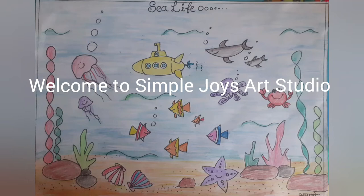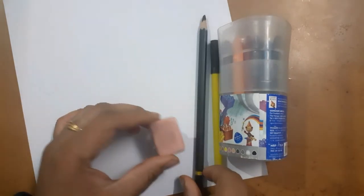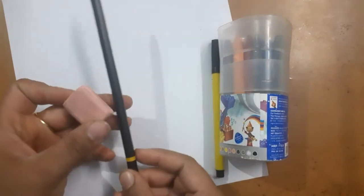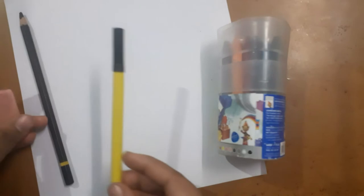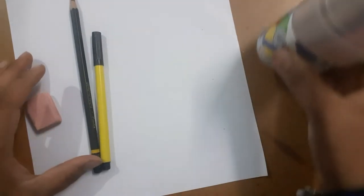Hello everyone, today we will learn how to make sea creatures using very basic and easy shapes. So let's get started. I'm taking some erasers, pencils, sketch pens, and any crayons you can use to do the coloring.